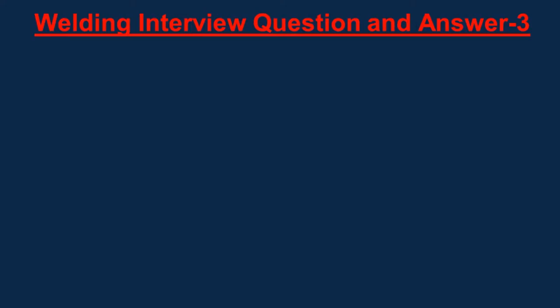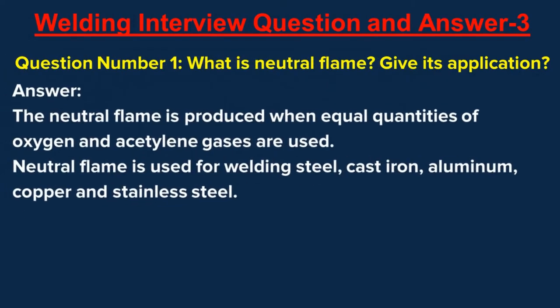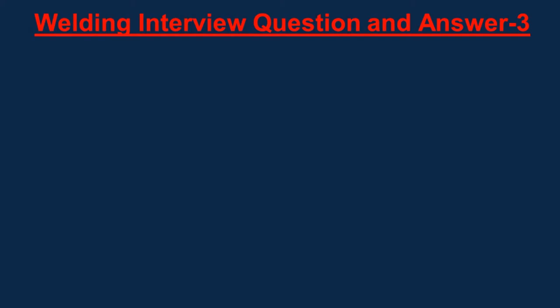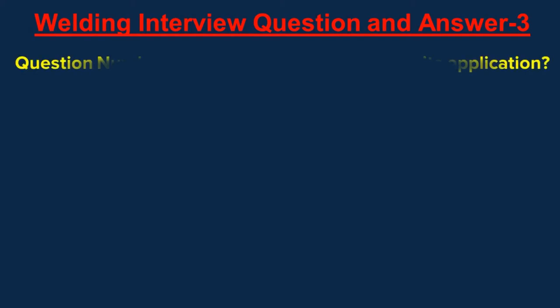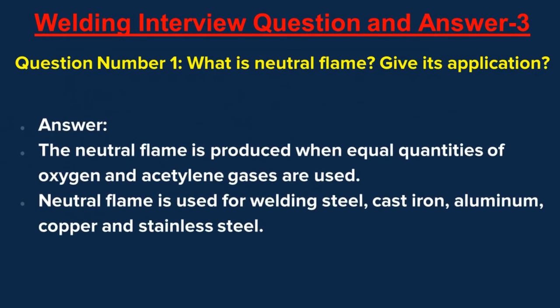Question number one: What is neutral flame? Give its applications. Answer: The neutral flame is produced when equal quantities of oxygen and acetylene gases are used. Neutral flame is used for welding steel, cast iron, aluminum, copper, and stainless steel.